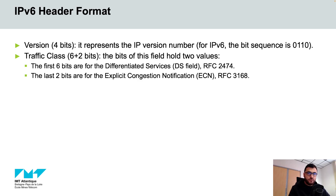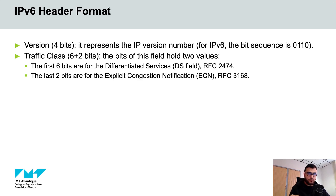The default value of 6 zeros corresponds to the classic service known as best effort. The last 2 bits of the field are used for explicit congestion notification, or ECN, and it allows end-to-end notification of network congestion.